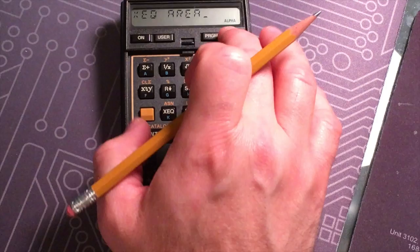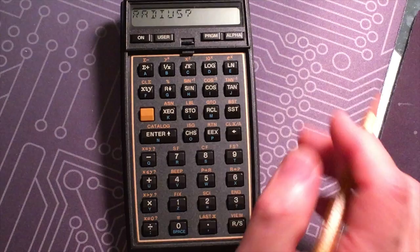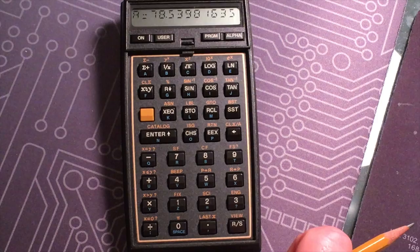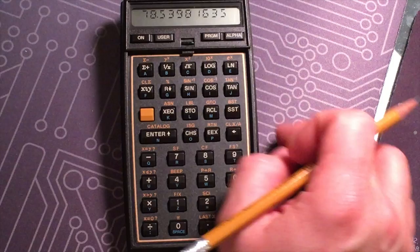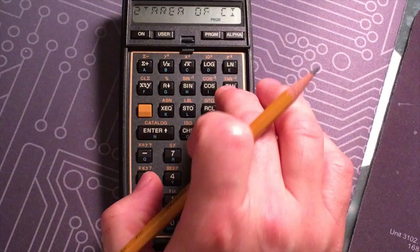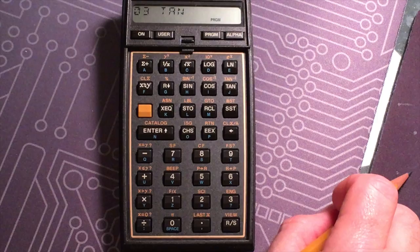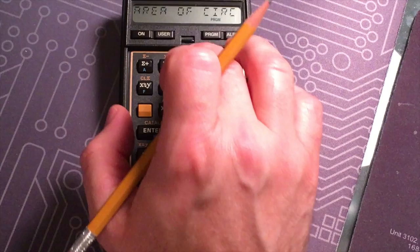I think I actually screwed my program up. I accidentally entered a tangent in there, so let me go... This would be a good demo of how to erase and edit these things. Yeah, that's the instruction I accidentally entered, so I'm just going to delete that.